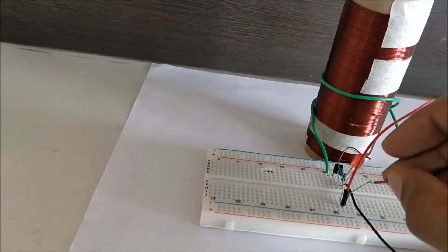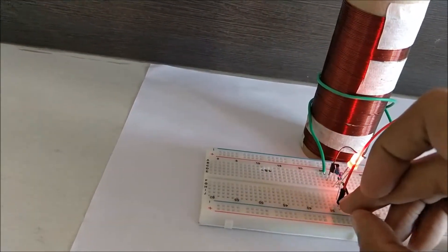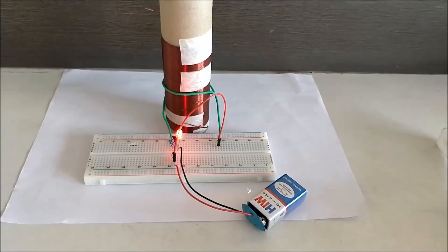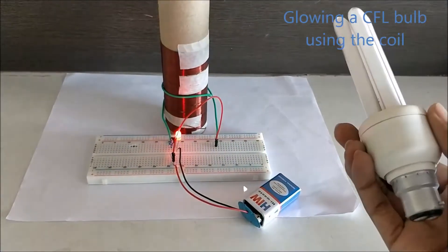Now let me go ahead and power it on using the 9 volt battery. As soon as you power it on, the LED starts to glow. The circuit diagram and explanation can be found at the link given in the description.